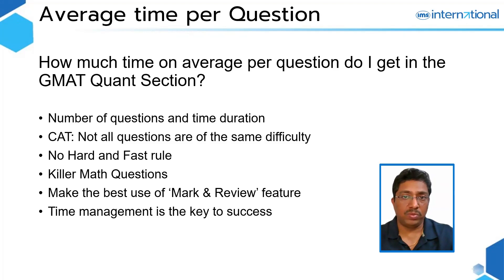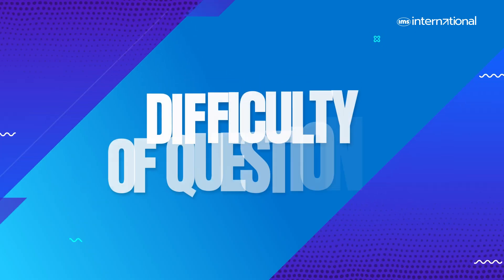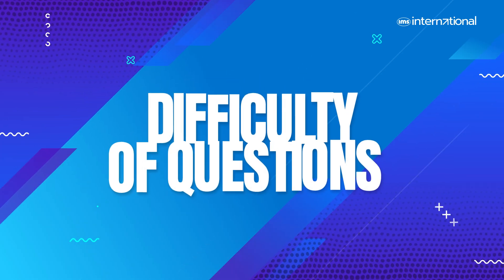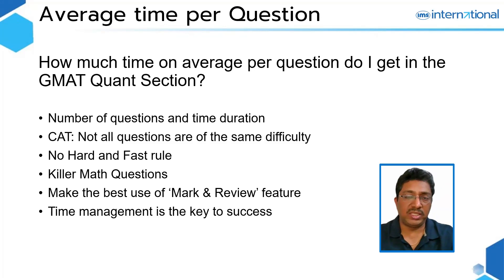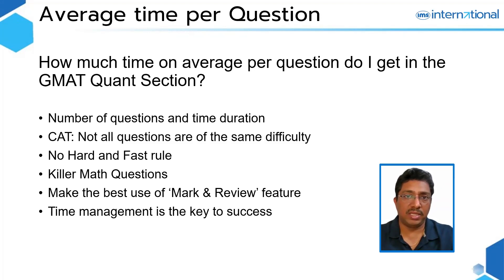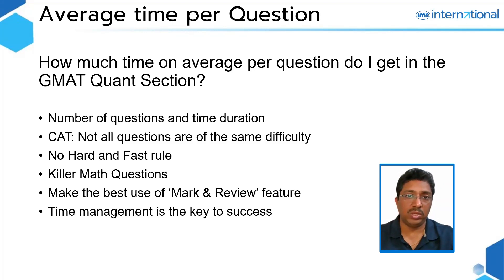But that's not how it works on GMAT, because GMAT is a computer adaptive test. The system keeps adapting to the performance of the test taker. If you're consistently getting questions right, there is a rise in difficulty level. If you're going wrong, there is a consistent fall in difficulty level. So not all questions on the GMAT quant section are of the same difficulty level.